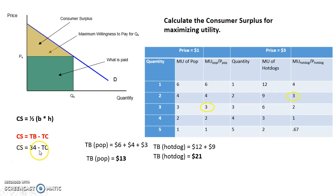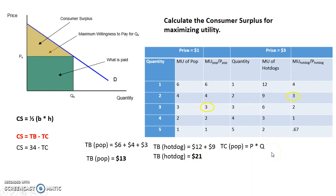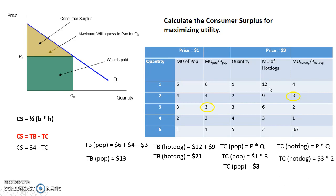Now plug that into the formula and figure out total cost. Total cost is price times quantity. For pop, they're buying 3 units at $1 each, so total cost of pop is $3. For hot dogs, they're buying 2 units at $3 each, so total cost is 2 times $3, which equals $6. Adding $3 plus $6 gives a total cost of $9.